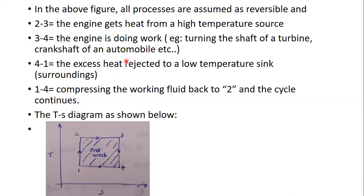Process 4-1 is where excess heat is rejected to a low temperature sink. During heat rejection, the energy decreases. We assume it is a constant temperature process — an isothermal heat rejection. During heat rejection, the entropy decreases while the temperature is kept constant. So on the TS diagram, it will be a horizontal line from 4 to 1, representing a constant temperature heat rejection process.